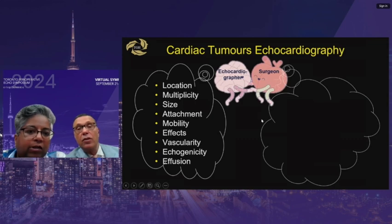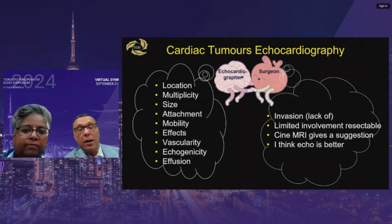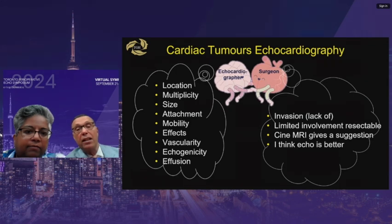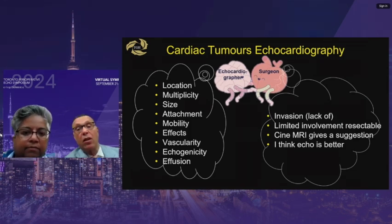From a surgical point of view, the key question is whether there's invasion — because while imaging doesn't tell us what the tumor is, invasion of structures or through walls gives a strong indication. There must be limited involvement for the tumor to be resectable. Even though cine MRI can suggest movement and invasion, echo is much better at demonstrating this and should always be obtained.